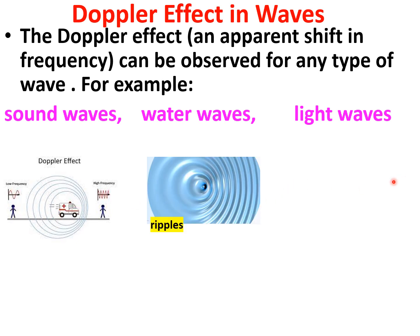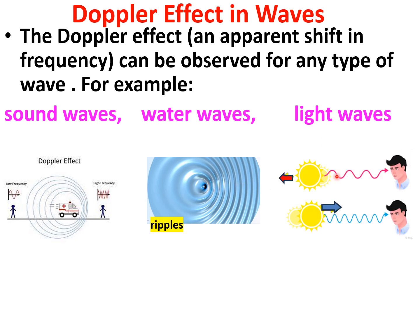Similarly, in the case of water waves, in still water the waves are circular, but if a bird or swimmer is moving in one direction there is an increase in frequency in that direction. In the case of light waves, if the source is moving away from the observer, we see a redshift — an increase in wavelength or decrease in frequency.